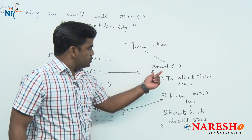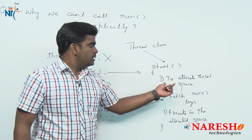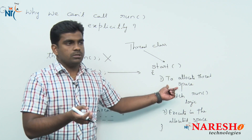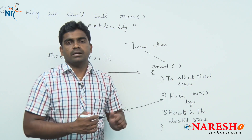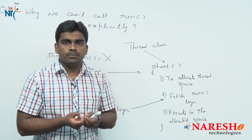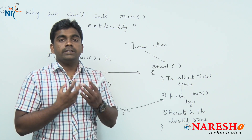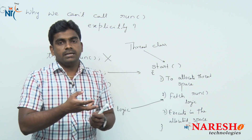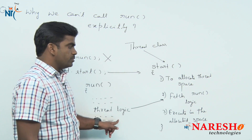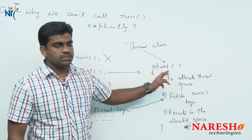The logic of the start method is that they have already written the logic to allocate the thread space separately. As a Java programmer, there is no need to write again how to allocate the thread space to execute the thread logic — the start method will take care of that.